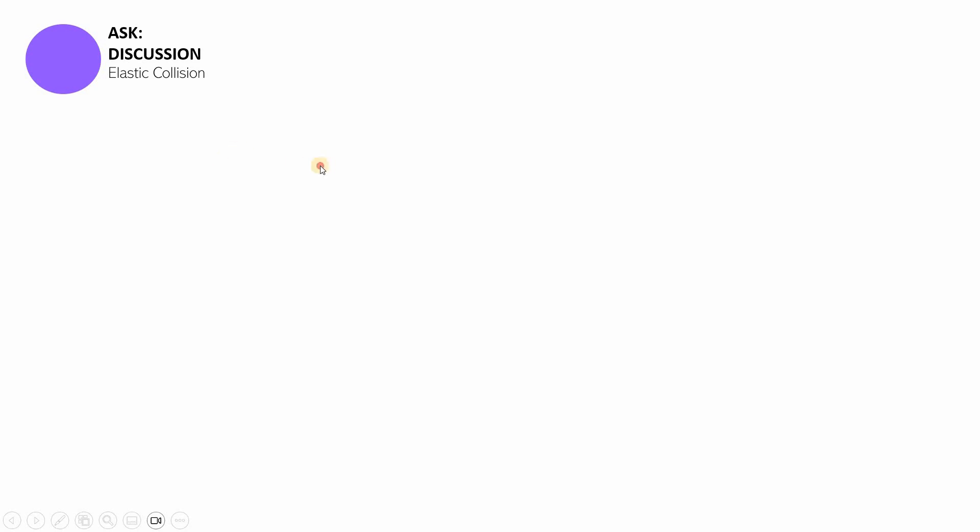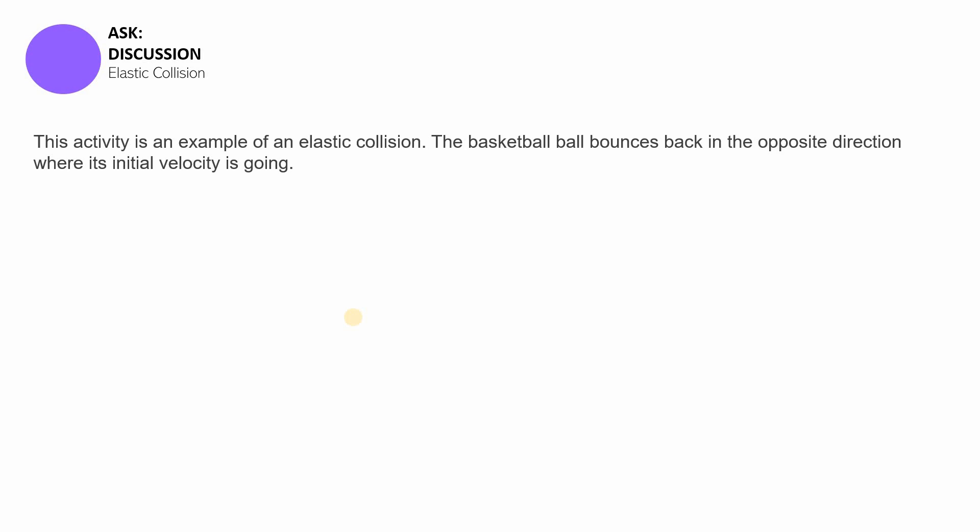For the first part, Ask, discussion on elastic collision. We had that activity with the basketball ball. So that activity was showing us something about an elastic collision. The basketball ball bounces back in the opposite direction where its initial velocity was going. So it didn't get stuck on the wall or the floor. Unlike clay, when you're using clay, it's really pliable, you can mold it. And when you throw it towards the wall, it gets stuck on the wall. But this time, since it's a basketball ball, it's not going to stick to the wall. It's going to bounce back in the opposite direction.